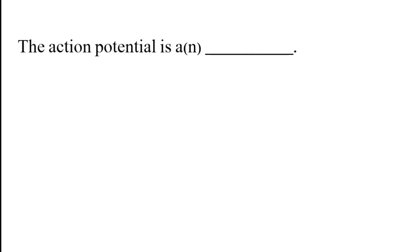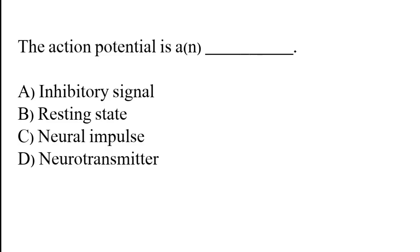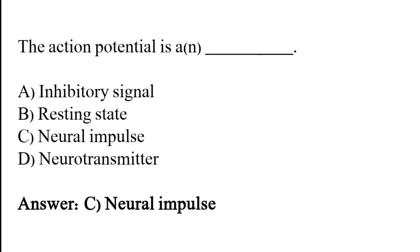The action potential is: an inhibitory signal, resting state, neural impulse, or neurotransmitter? The correct answer is option C. The action potential is a neural impulse.